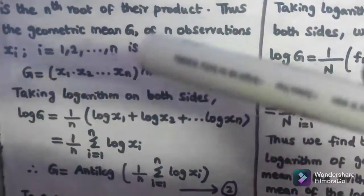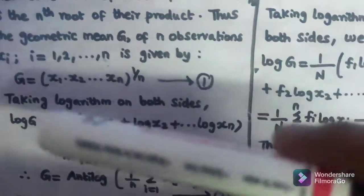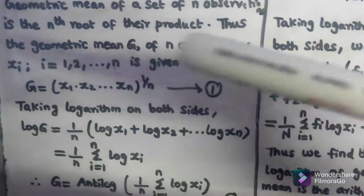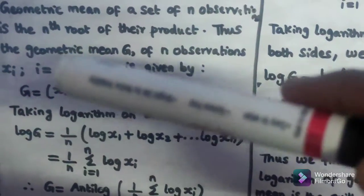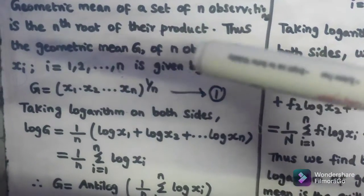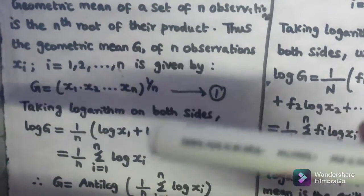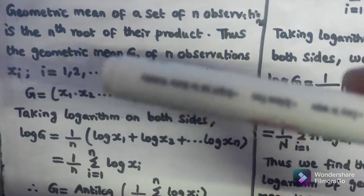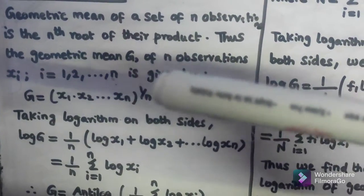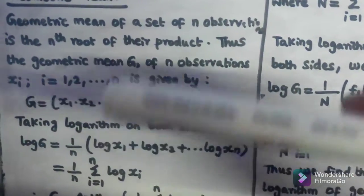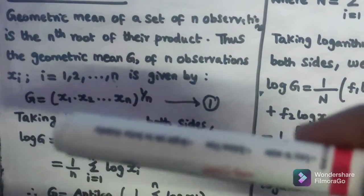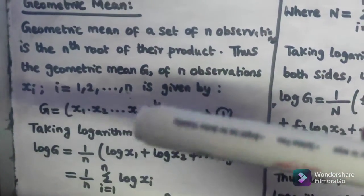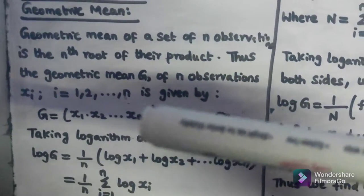Now taking logarithm on both sides, log G = (1/n) log(x1 · x2 · ... · xn). We apply the formula log(a · b) = log a + log b, so we can write (1/n)(log x1 + log x2 + ... + log xn).